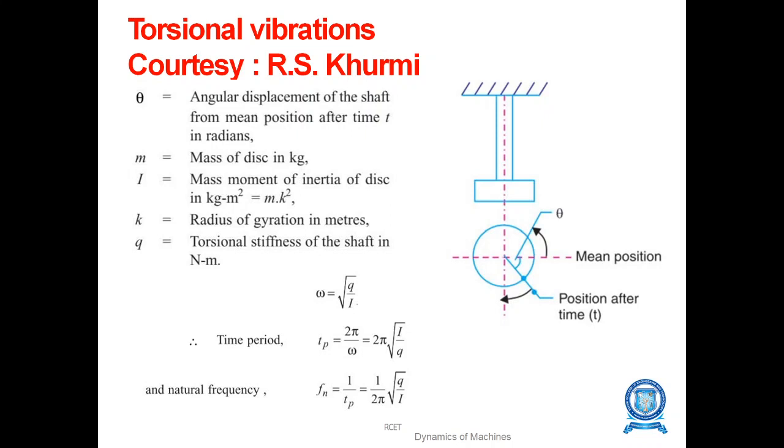Consider a system which has a disc attached at the lower end, and the upper end is fixed to the rigid body. Theta is the angular displacement of the shaft from the mean position, which is turned into an angle.